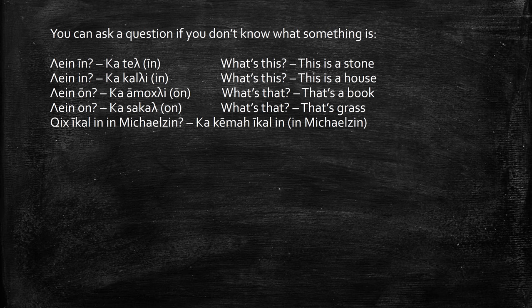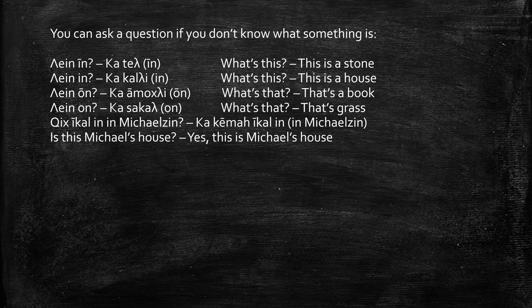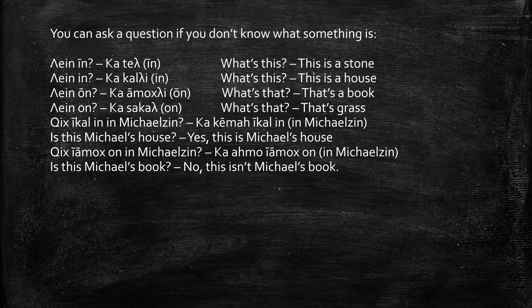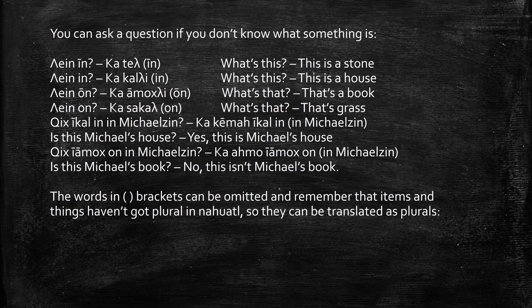Kus iqal inim inum kelzing — is this Michael's house? Yes, this is Michael's house. Kus iamush inum — is this Michael's book? No, this isn't Michael's book. Note: words in brackets can be omitted, and remember that items and things have no plural in Nahuatl, so they can be translated as plurals.